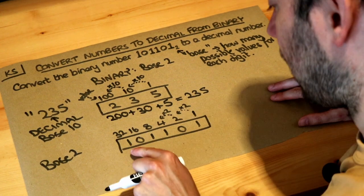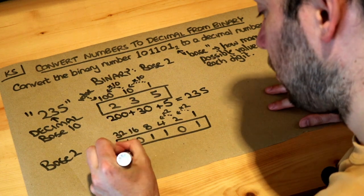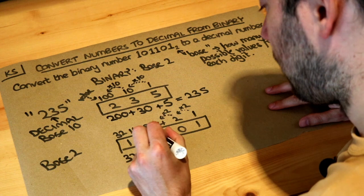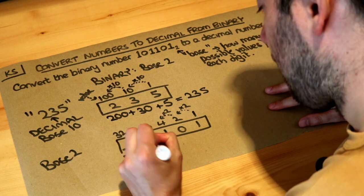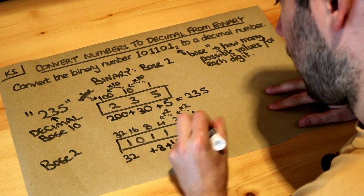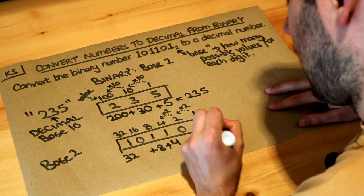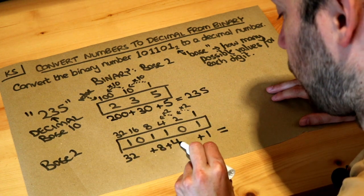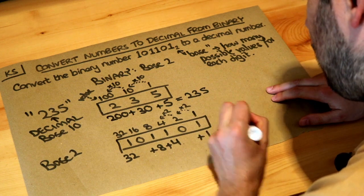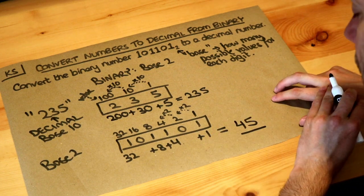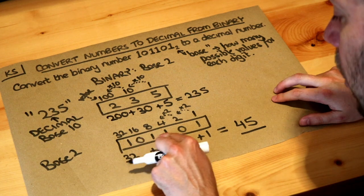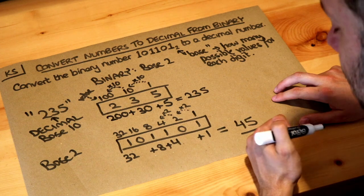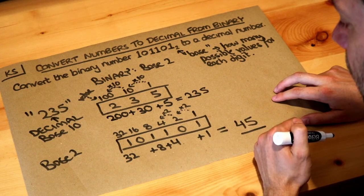We do exactly what we did before. That 1 is worth 32, so we put 32. We've got 0 lots of 16, so we don't need to add it. We've got 1 lot of 8, 1 lot of 4, and 1 lot of 1. Adding those together: 32 plus 8 is 40, plus 4 is 44, plus 1 is 45. So the value of this binary number 101101 is 45 in decimal.